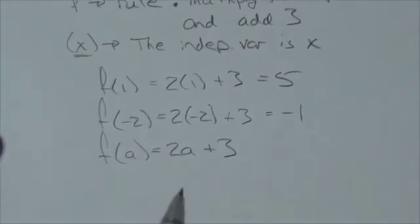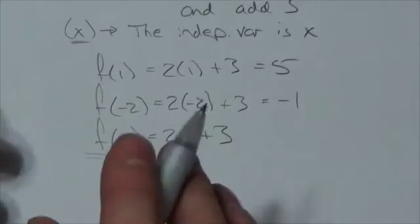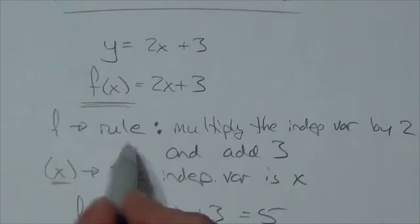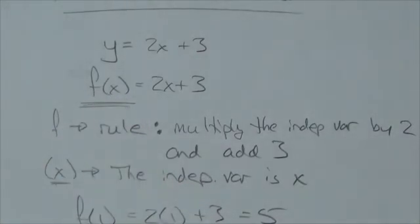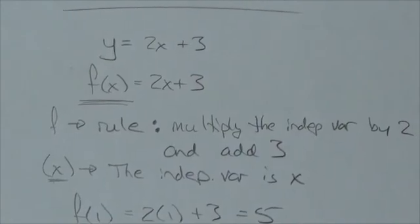But the surest way to understand, and make sure that you're doing that right here, is to make sure you get in your head, what is it that the f represents? And the f represents the rule. Whatever's inside the parentheses, that represents the independent variable that the rule is acting on.